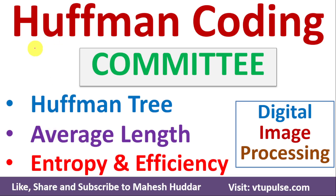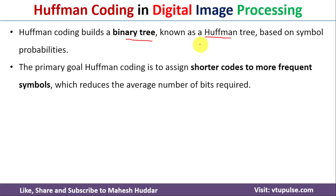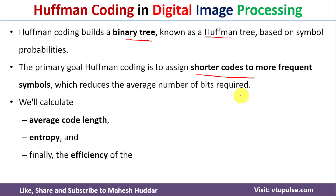Welcome back. In this video, I will discuss how to apply Huffman coding for efficient image compression. Huffman coding builds a binary tree known as a Huffman tree based on symbol probabilities. The primary goal of Huffman coding is to assign shorter codes to more frequent symbols, which reduces the average number of bits required. We will determine the Huffman tree, average code length, entropy, and efficiency.